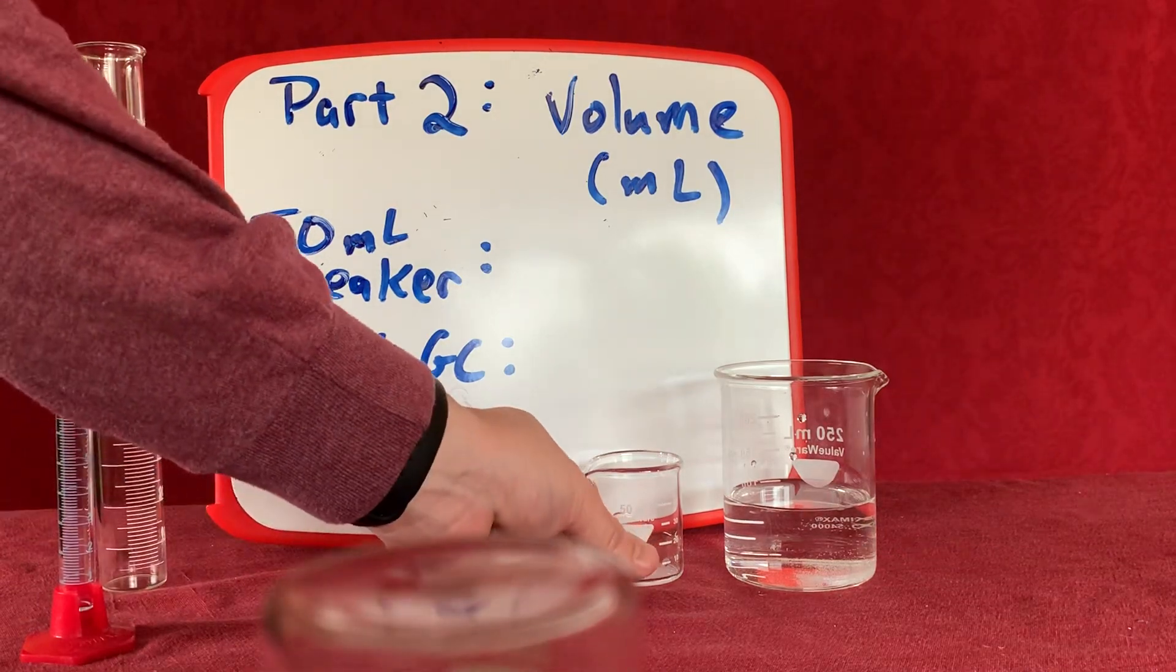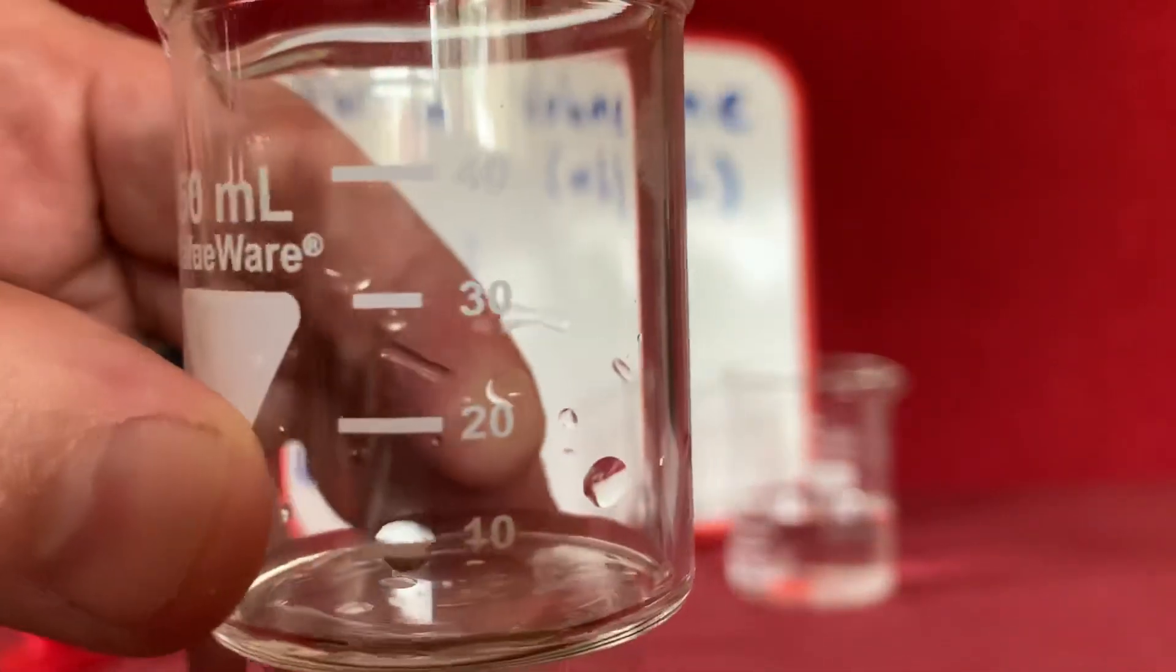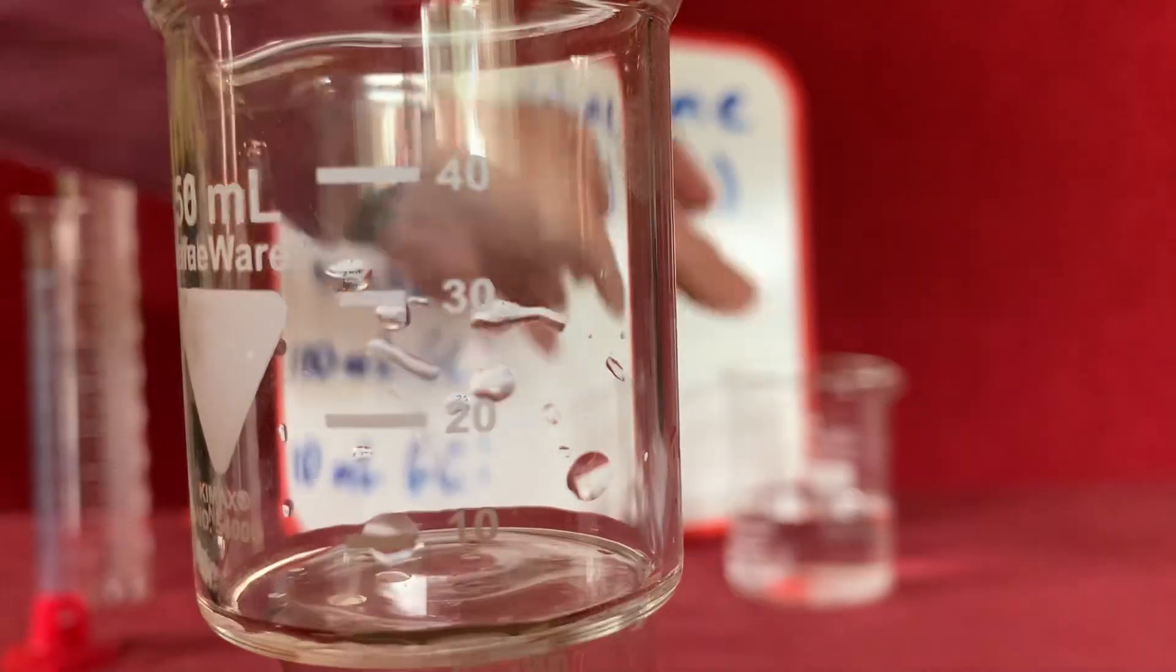We're going to start with the 50 milliliter beaker. I'm going to take this beaker and we're going to add approximately 30 milliliters to it.